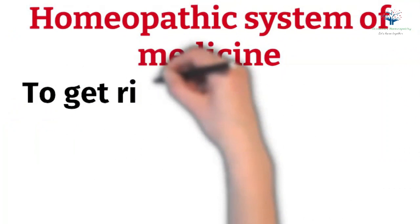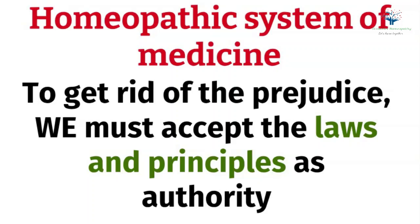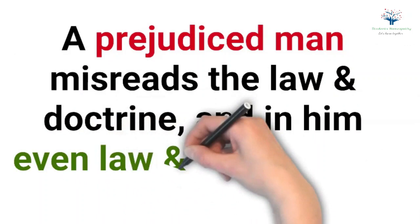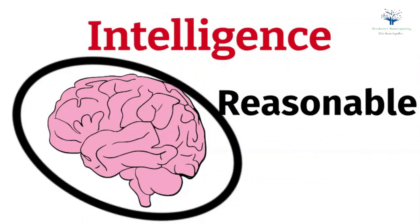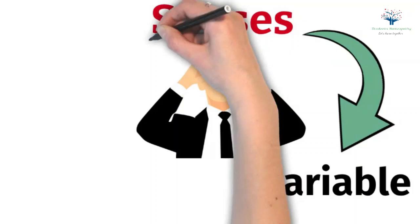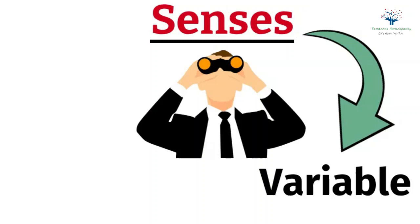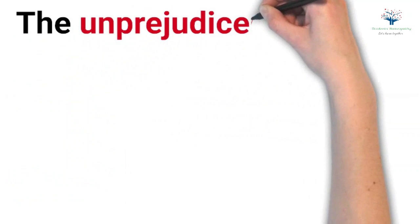Likewise, in homeopathy, to get rid of prejudice, we must accept the laws and principles as the authority. A prejudiced man misreads the law and doctrine, and in him even law and doctrine will deceive. Thus, it is necessary to use our intelligence, as using intelligence makes us reasonable. Using senses only makes observations variable because our senses vary. Thus, reliance on senses only leads to the construction of different notions and theories.